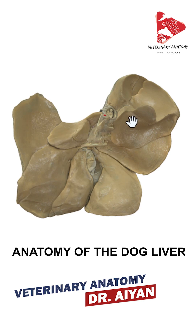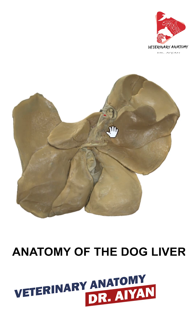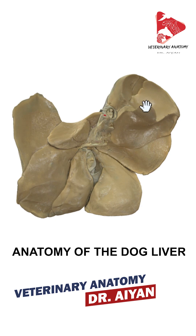In the middle you will find a small process called the papillary process, which belongs to the caudate hepatic lobe. The caudate hepatic lobe has two processes in the dog: the first is the caudate process, which we already discussed, and this second one is the papillary process.